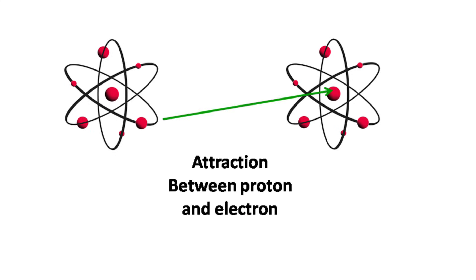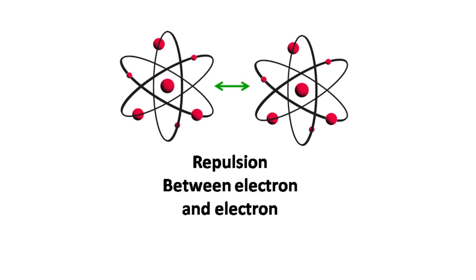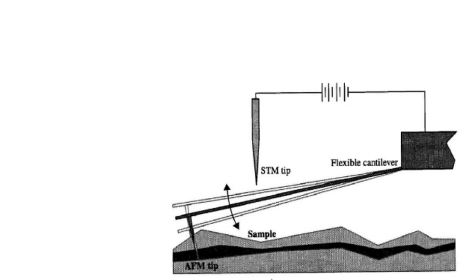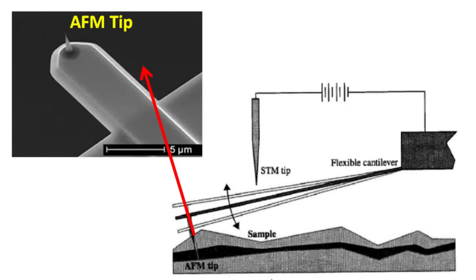If two atoms are located at a certain distance, the positively charged proton of one atom will attract the negatively charged electron of the other. If two atoms come very close to one another, the electrons in the outer shell of both atoms repel each other. The atomic force microscope uses a small nano-size tip which can be either attracted or repelled by the atoms present in the sample.